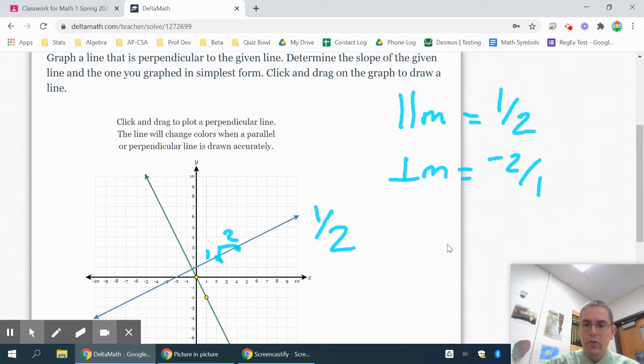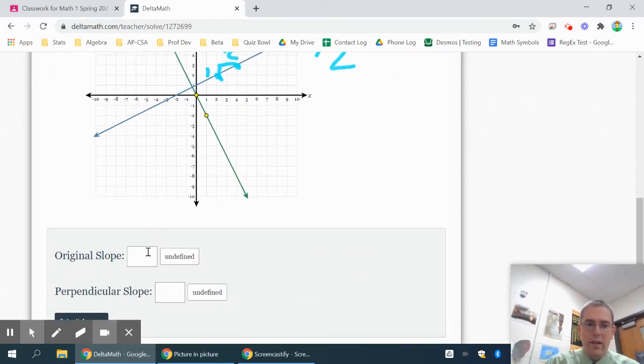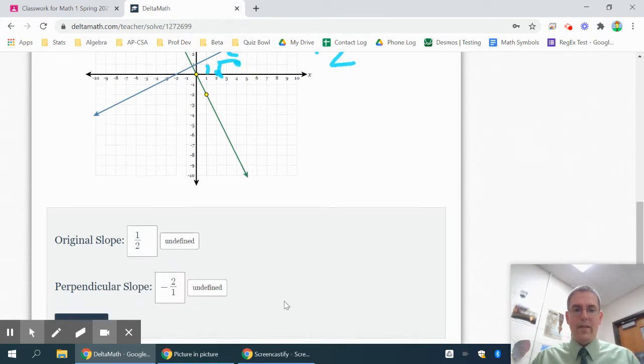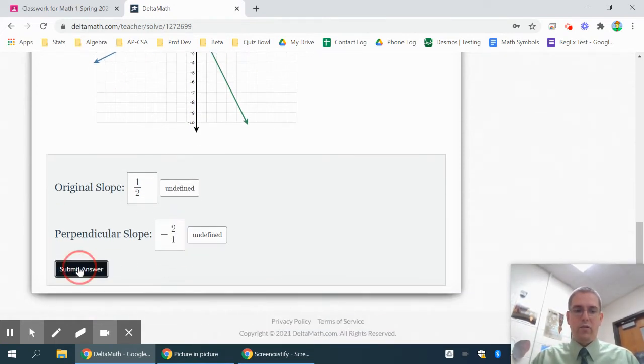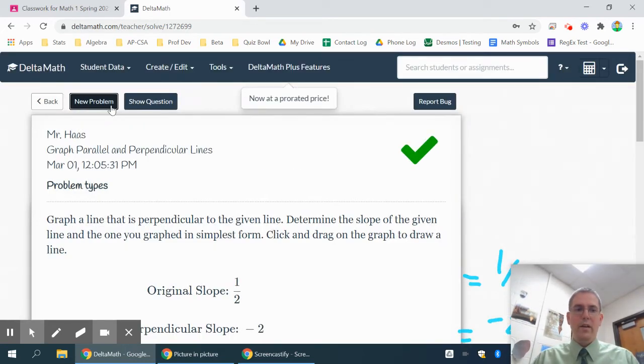Then you should be able to mark that solution as correct, and it did ask for your original slope which was one half and your perpendicular slope which was negative two over one. And then I would say submit your answer and that would be correct.